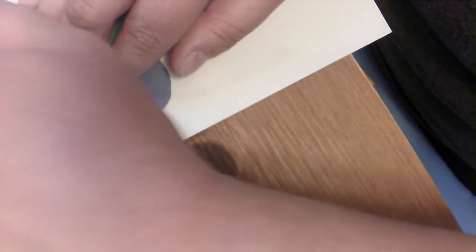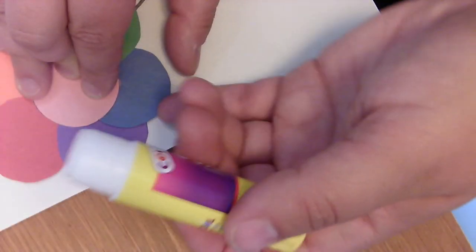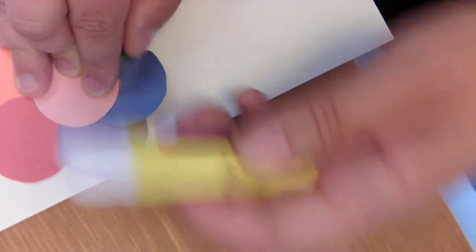A little bit of glue. Don't need a whole lot of glue. That's the nice thing about glue sticks. You don't need a lot of glue.